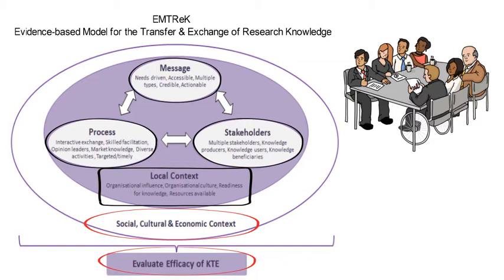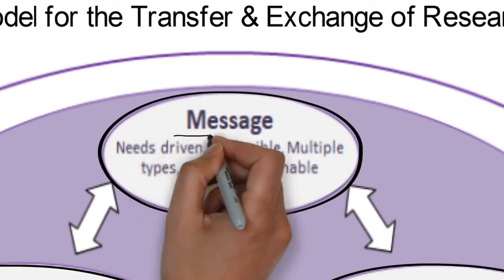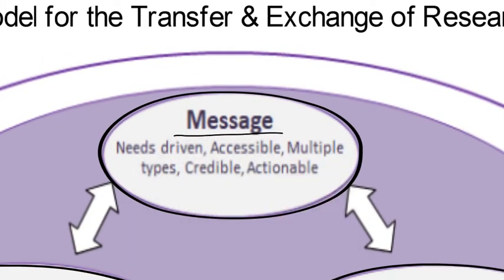These are the things the literature has highlighted as needing to be looked at. Knowledge transfer requires that a message highlights the impact on user need — that it's actually necessary and important. It's important that the knowledge, that message, is accessible to the listener, to the audience. The knowledge has to be credible and it has to be actionable — there needs to be something to be done from it. This all improves the possibility of that transfer process.